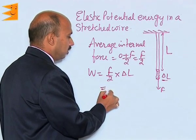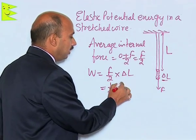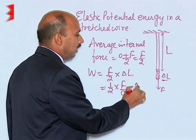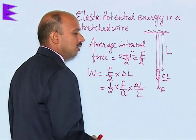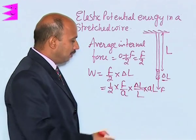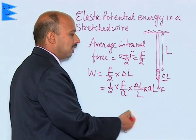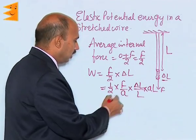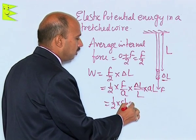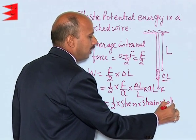Now we can write this as 1/2 into... we divide by A (area of cross section of the wire) and also divide by L, and multiply by A and L. So we have divided by A and multiplied by A, and divided by capital L and multiplied by capital L. So this can be written as half into stress into strain into volume of the wire.